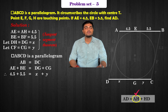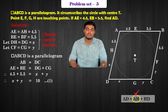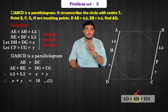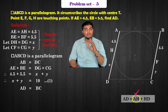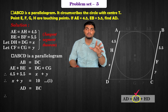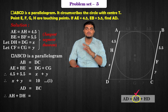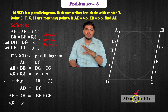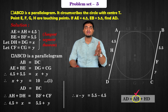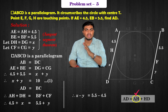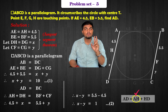4.5 plus 5.5 equals 10, so x plus y equals 10 — that is equation number 1. Next, AD is equal to BC. So AH plus HD equals BF plus FC, giving us 4.5 plus x equals 5.5 plus y. Rearranging: x minus y equals 5.5 minus 4.5, which gives x minus y equals 1 — equation number 2.